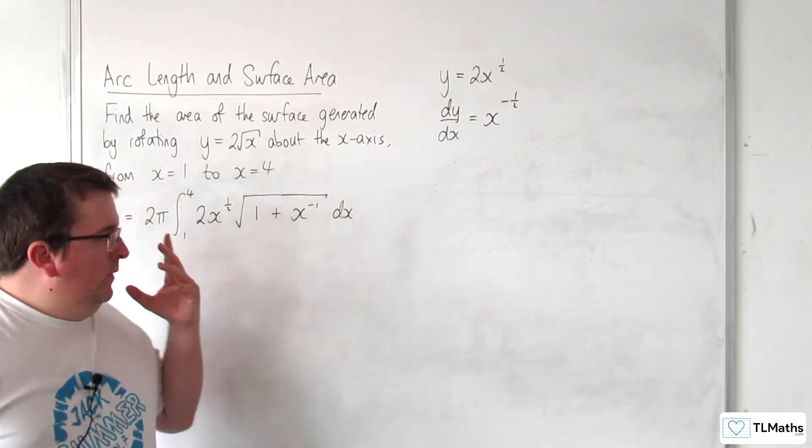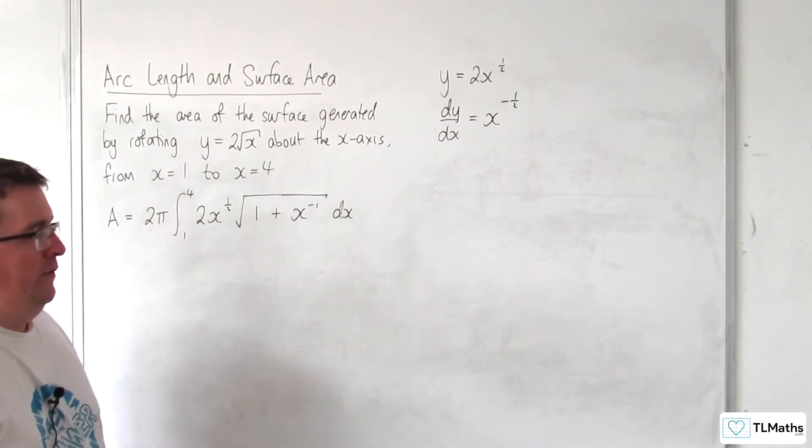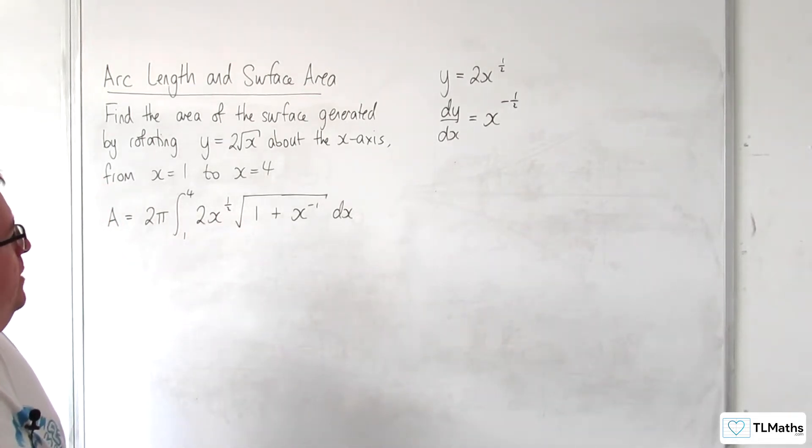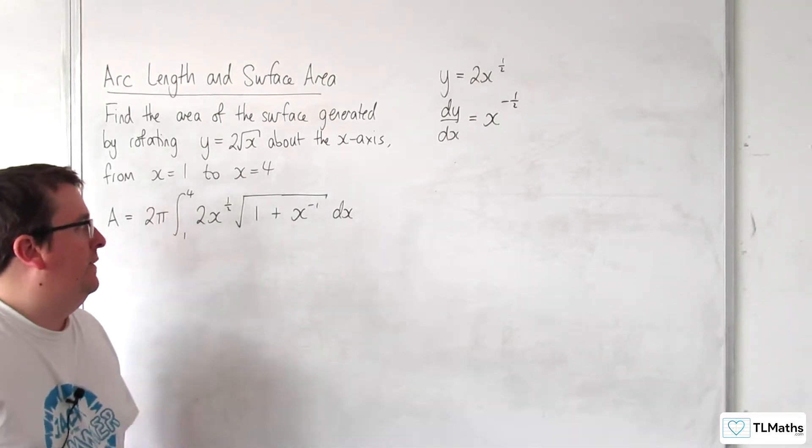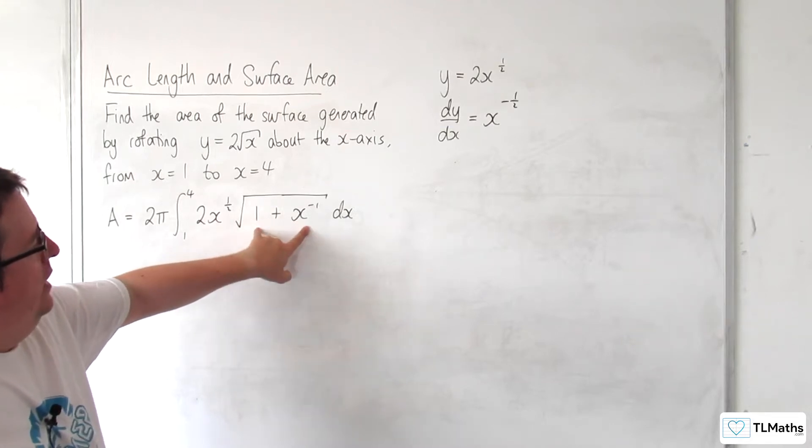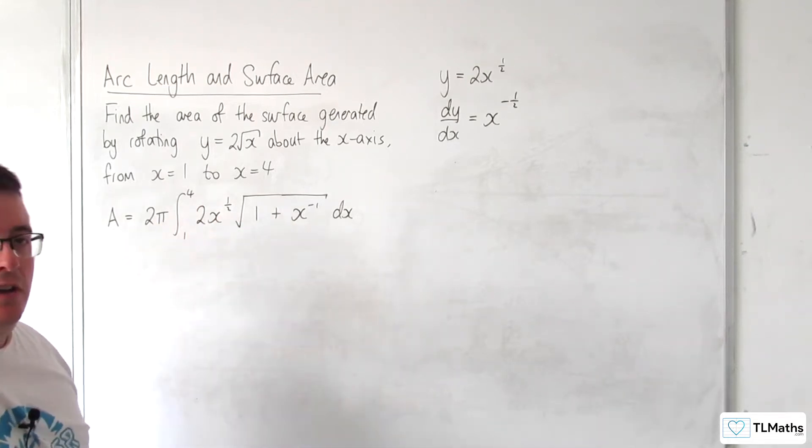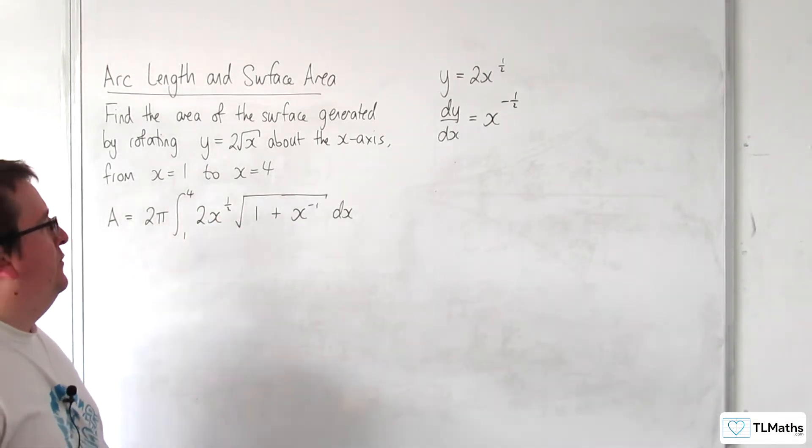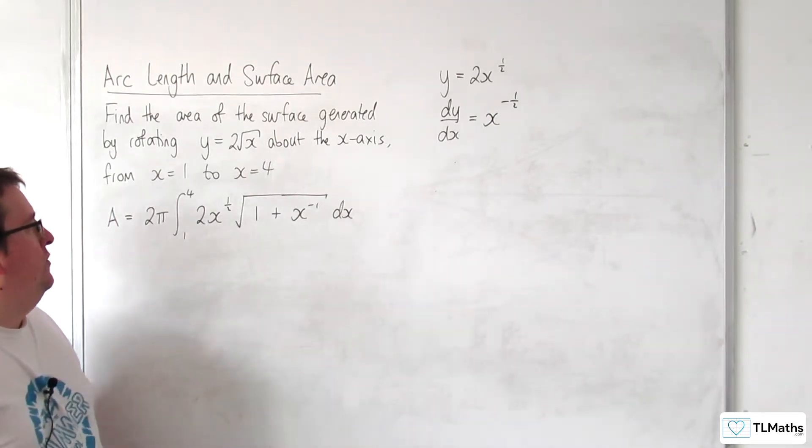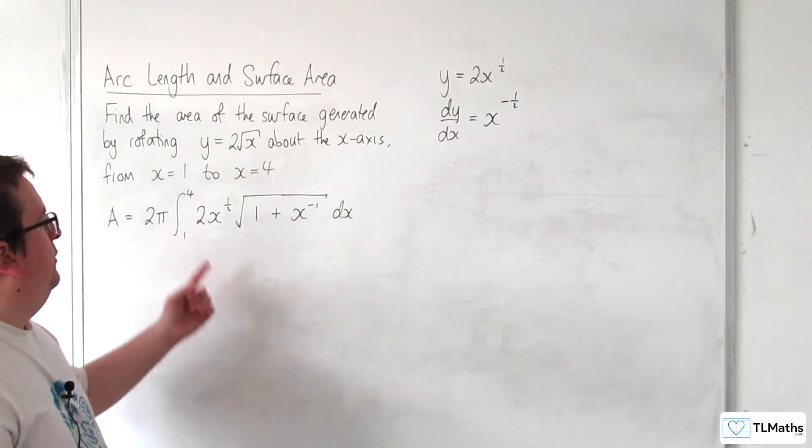Confronted with this integral, first thing you might be rotating through your head is parts. Probably not a good idea. Parts isn't going to get us very far. Unfortunately we can't just directly reverse the chain rule because we've got the 1 plus x to the minus 1 inside, but that doesn't differentiate to a multiple of x to the half, so we can't do that. We're going to have to think about a substitution to use.